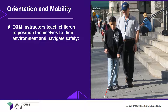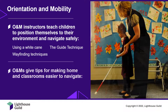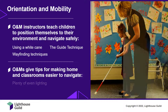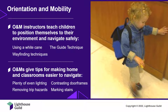Orientation and Mobility Instructors, or O&Ms, work with children on how to position themselves in their environment and to navigate safely from one place to another. This may include using a white cane, using wayfinding techniques, and the guide technique for walking with another person. O&Ms also make recommendations to parents and teachers, such as tips for making the home and classroom easier to navigate — for example, making sure there is enough light and that lighting levels are uniform from room to room, removing trip hazards such as scatter rugs, painting door frames a contrasting color to the wall, and marking stairs with non-skid contrasting strips.